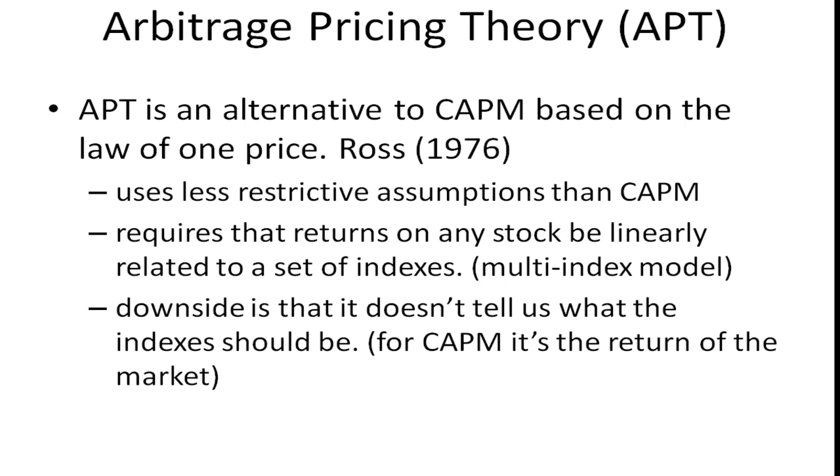Let's talk about Arbitrage Pricing Theory or APT. APT is an alternative to the capital asset pricing model and it's based on the law of one price. This was first derived by Stephen Ross back in 1976, about a decade after the capital asset pricing model was formulated.